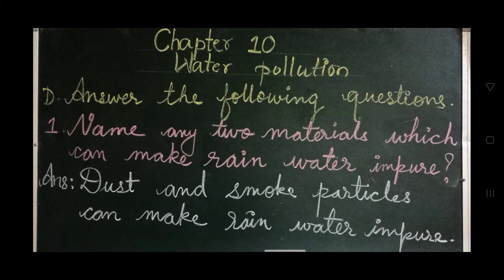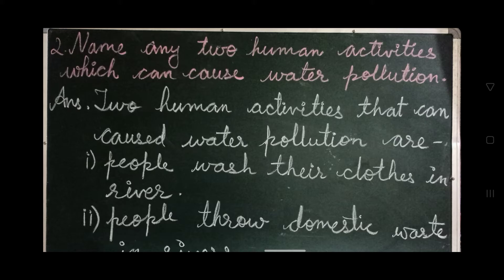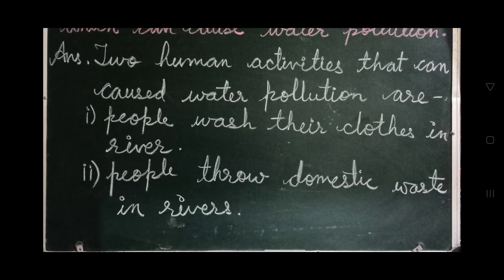Now let's move to question number 2: Name any two human activities which can cause water pollution. Answer: Two human activities that can cause water pollution are — people wash their clothes in rivers, and people throw domestic waste in rivers.